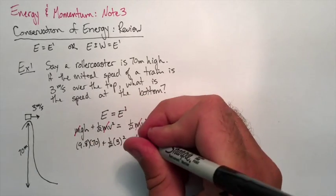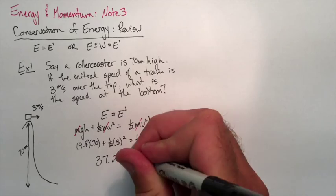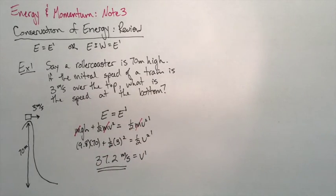Now we can sub in our numbers and solve for our V prime. And here we get 37.2 meters per second for our speed at the bottom of the hill.